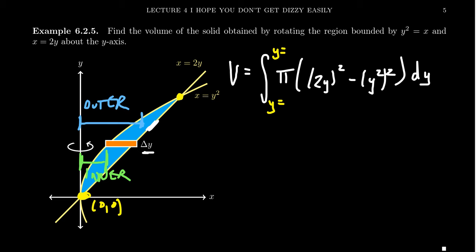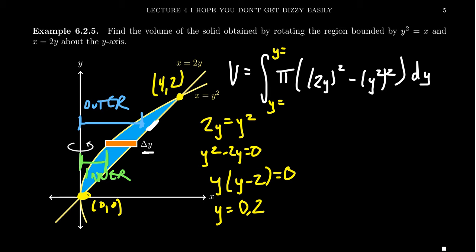This point right here might be a little less intuitive. So let's solve it just by intersecting. That is, set the two equal to each other. We solve the equation 2y equals y squared. You can subtract 2y from both sides. y squared minus 2y equals 0. If you factor, you get y times y minus 2 equals 0. And so the two points of intersection is 0, which we already knew, and 2 is the other one. So this point right here is 4, 2. So we're going to integrate from y equals 0 to y equals 2.